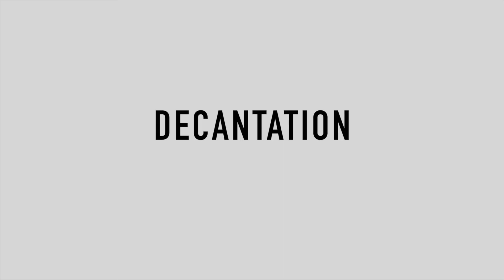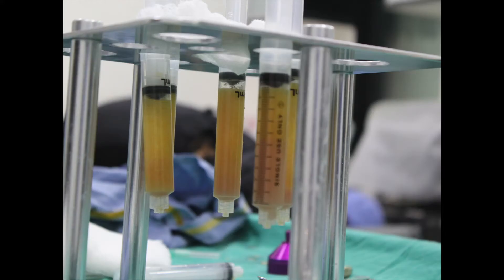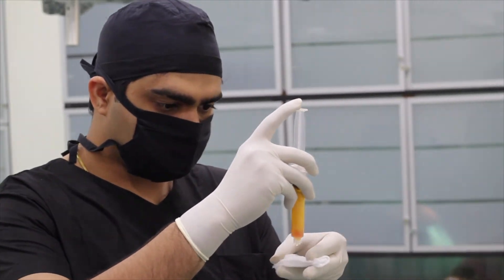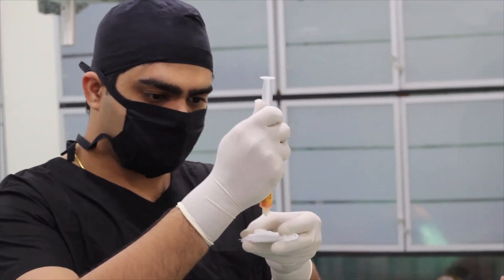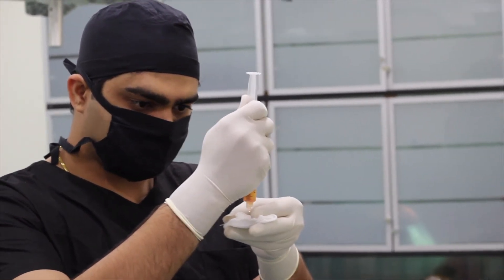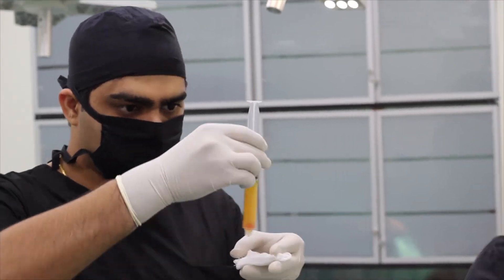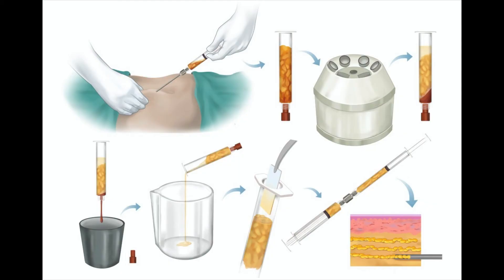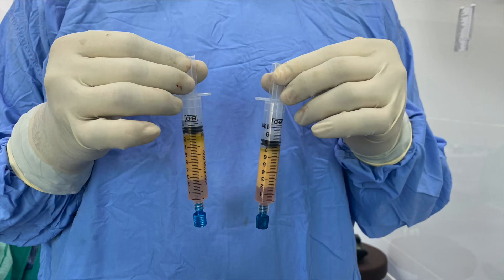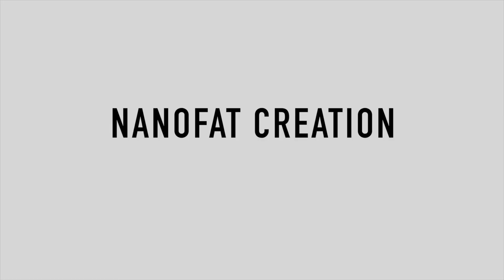This is a commercially available kit which can be used. In the decantation method, no kits are required — we simply let the syringes stand for 10 to 15 minutes and then the fluid that collects at the bottom due to gravity is pushed off. This is a crude method but can still be done. In centrifugation, we use a centrifuge to separate the layers of fat — the oil layer, fat layer, and fluid.